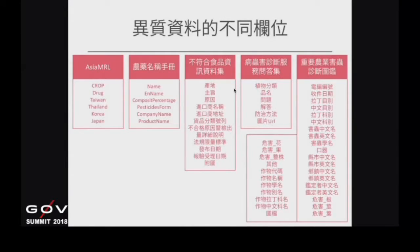農藥名稱手冊的部分，是從食藥署那邊把食品相關農藥殘留的名稱與成分轉出來，因此有了比較能夠查詢的標準化學名稱。要做跨國農藥殘留議題時，不同國家能用的農藥品項跟殘留量是不一樣的，目前能找到的是台灣這部分的開放資料集。資料集裡面可以從進口商名稱及營業登記證項目，反推找到跟其他資料庫之間的關聯。